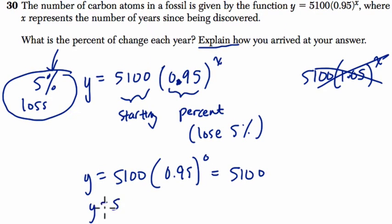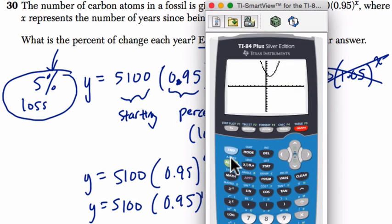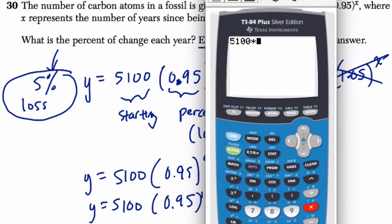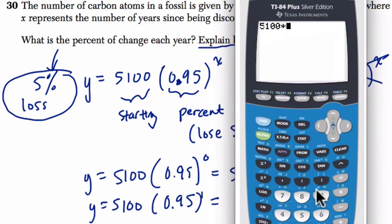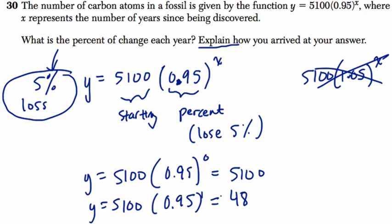So after one year, what happens? We get 5100 times 0.95 to the 1st, and that equals, well, let's just calculate it, 5100 times 0.95, and that gets me 4845.